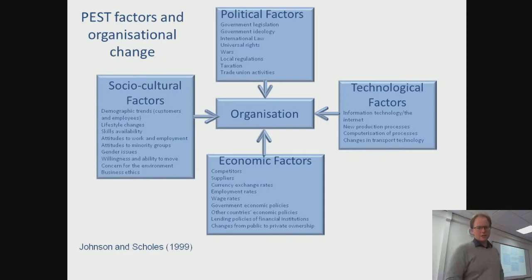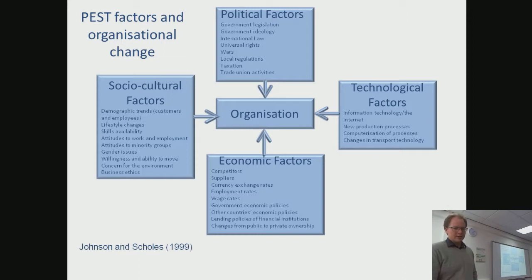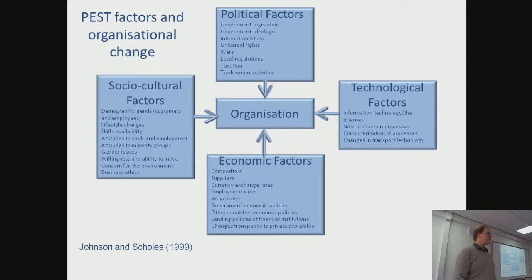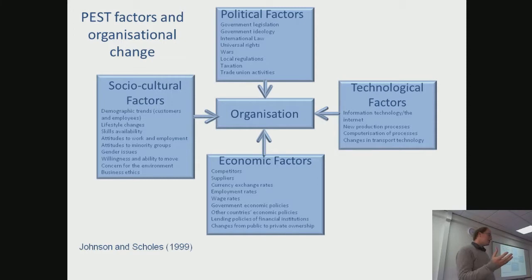So then social-cultural factors — maybe demographic trends, customers and employees. In Europe, we have an exciting experiment at the moment. What does demographic trends mean if we have, by average, 1.4 children? What have we decided as a society? So we have only one to two children, and the majority is even having less than two children. This means that the society shrinks, and it gets more and more difficult to recruit young people.